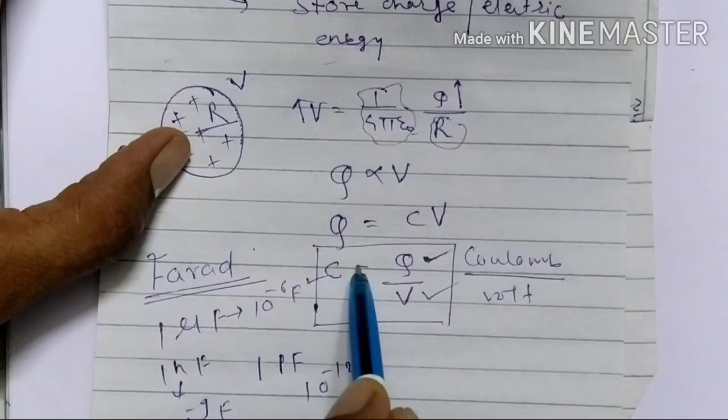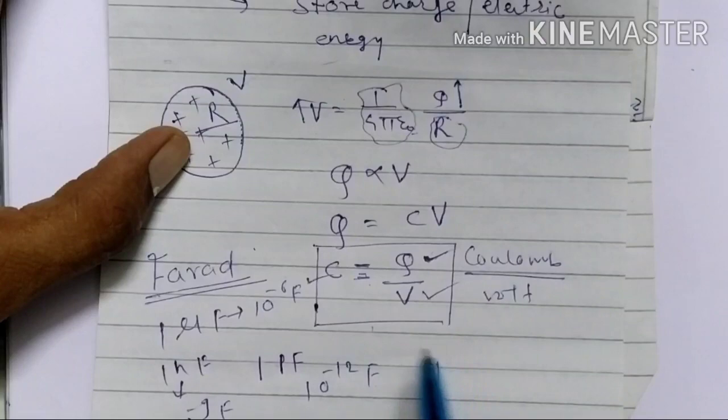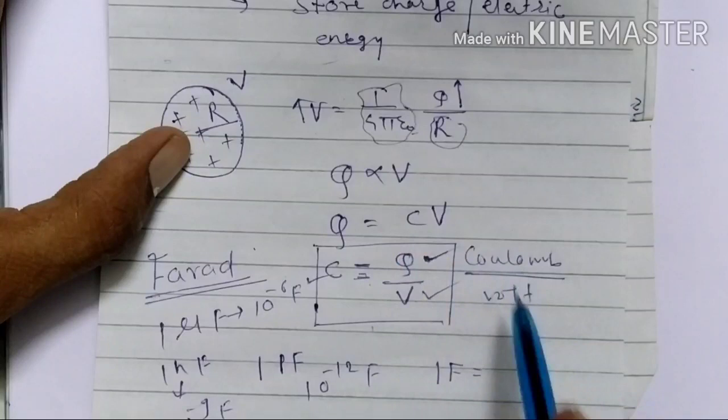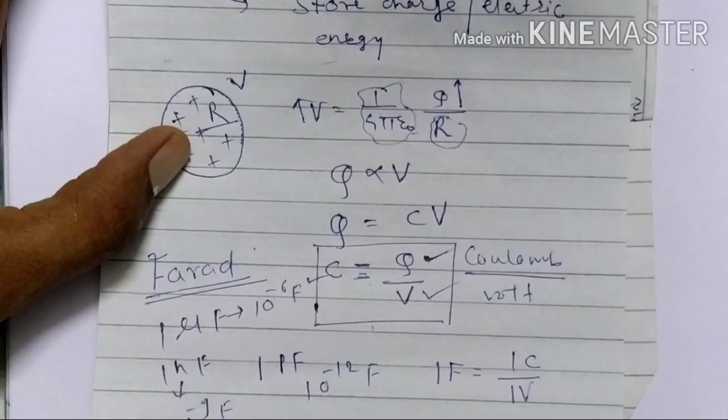Always remember: C is the capacitance of a capacitor and equals Q upon V. For example, the capacitance of a capacitor is 1 Farad if the potential of the capacitor increases by 1 volt when 1 coulomb of charge is provided to that capacitor.